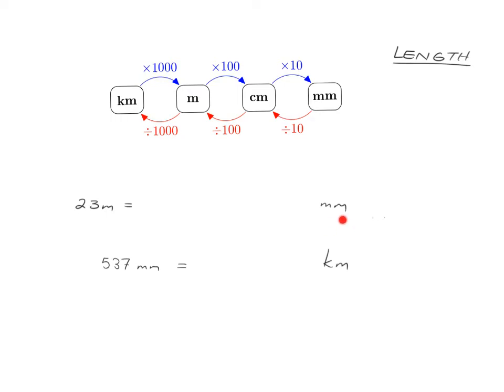For example, if I want to go from 23 meters and find how many millimeters it is — pause the video and see if you can get the answer. To go from meters to millimeters, we have times a hundred, then times ten, so 23 times a hundred times ten gives us 23,000 millimeters.